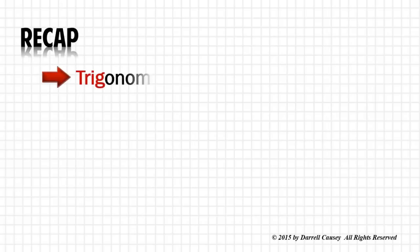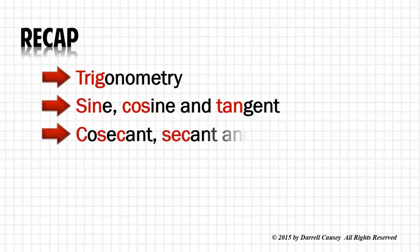Let's recap. We talked about trigonometry, sine, cosine, and tangent. We then looked at cosecant, secant, and cotangent. And we want to make sure we know SOH CAH TOA.